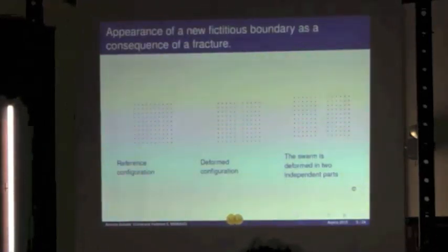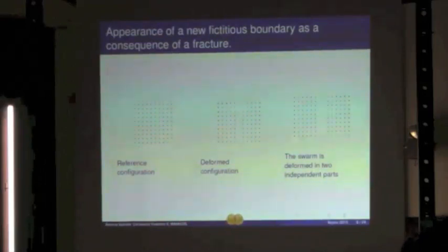To be more clear, maybe it's better to see this picture, in which we see the reference configuration with, in red, the fictitious boundary, then the deformed configuration just before the fracture has occurred in the system, and the last part of the slide shows the system when the fracture has occurred, and the system is made actually of two independent parts, with the birth of the fictitious boundary between.